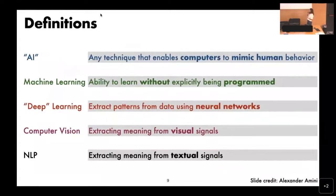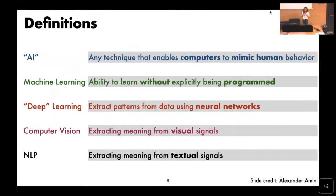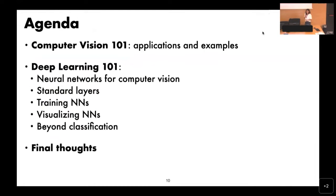To briefly define terms: AI is any technique that enables computers to mimic humans. Machine learning is the ability to learn without explicitly being programmed. Deep learning is machine learning with neural networks. Computer vision is extracting meaning from visual signals, and NLP is extracting meaning from textual signals. Today I'd like to do a 101 for both computer vision and deep learning, with general concepts, applications, and examples — nothing too technical.